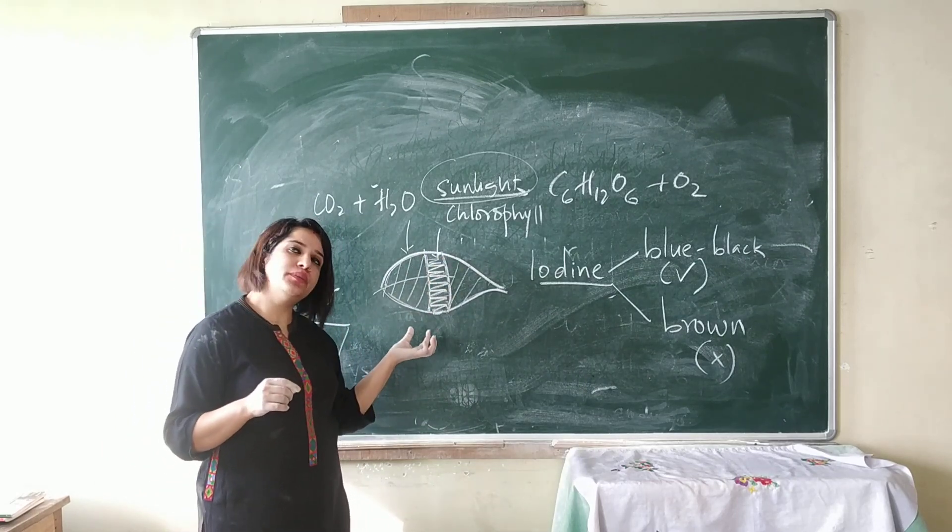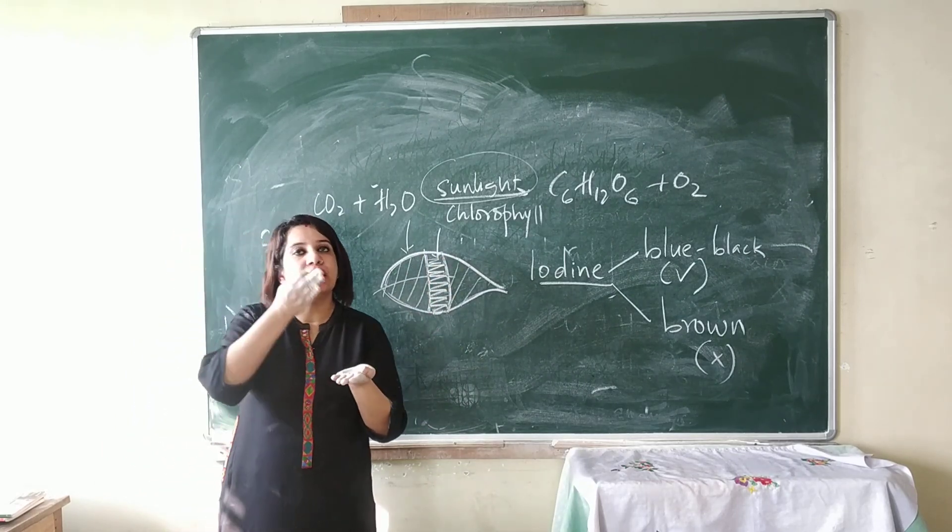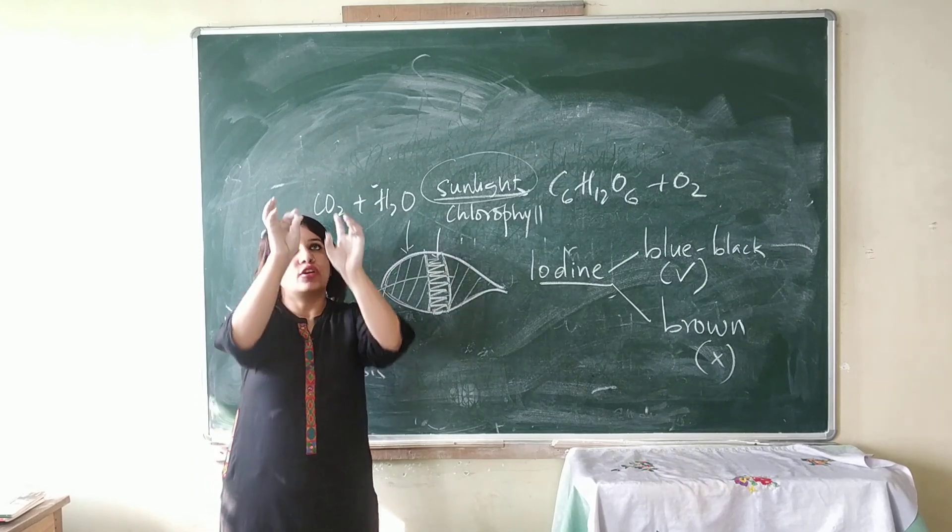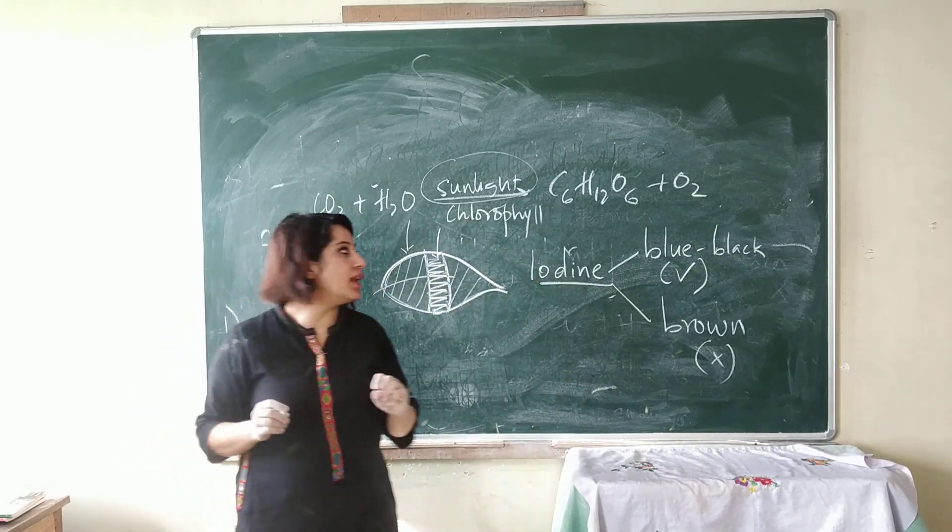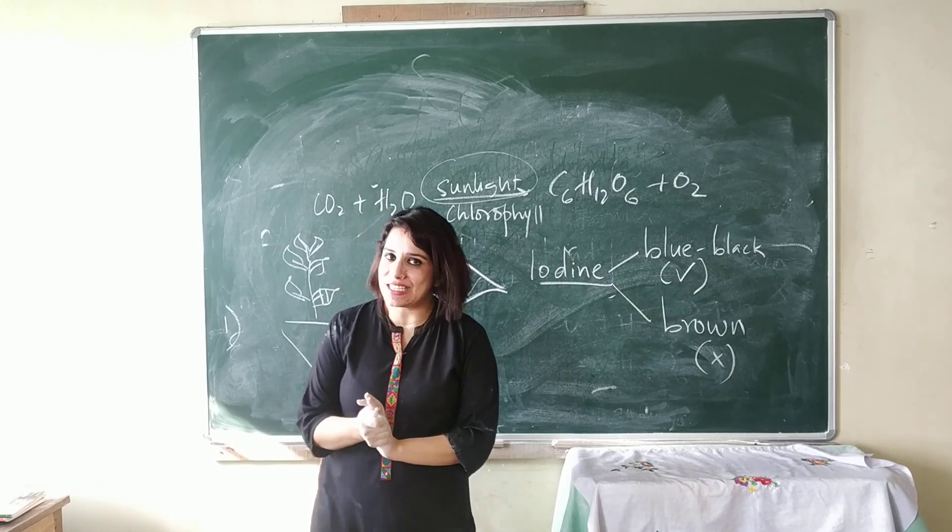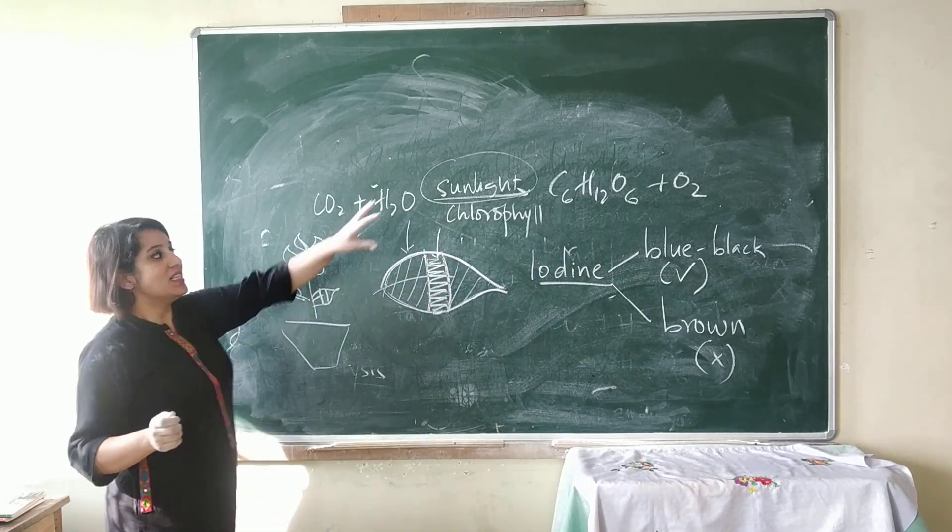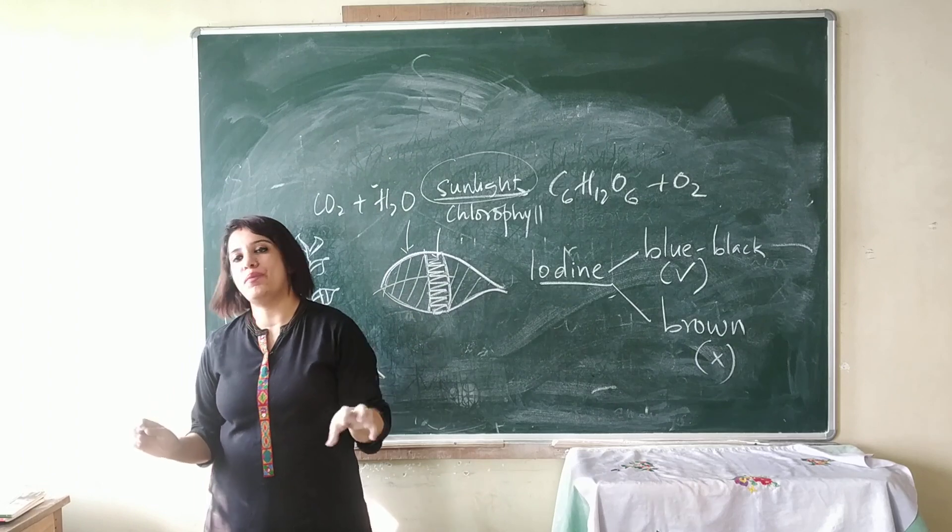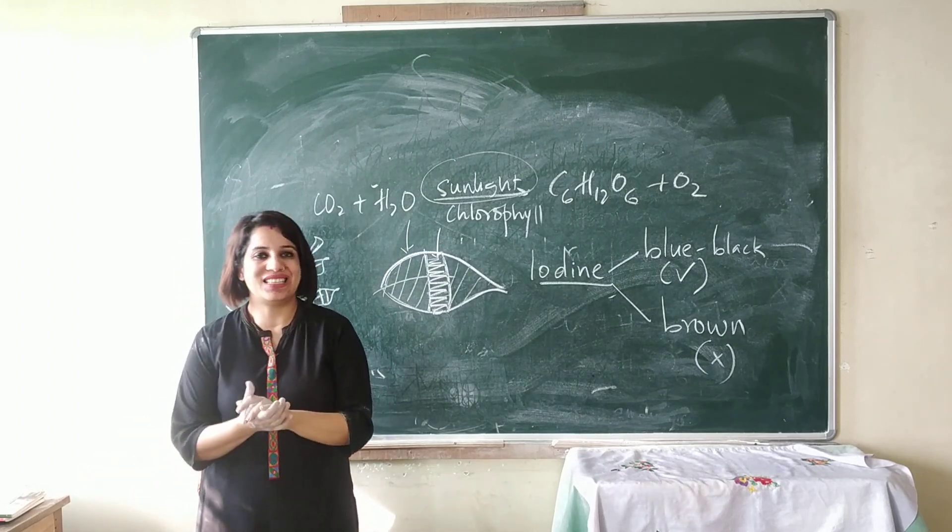But the portion covered with black paper did not receive sunlight. The chlorophyll could not absorb sunlight, so glucose could not be produced. This experiment proves that sunlight is very important for photosynthesis.